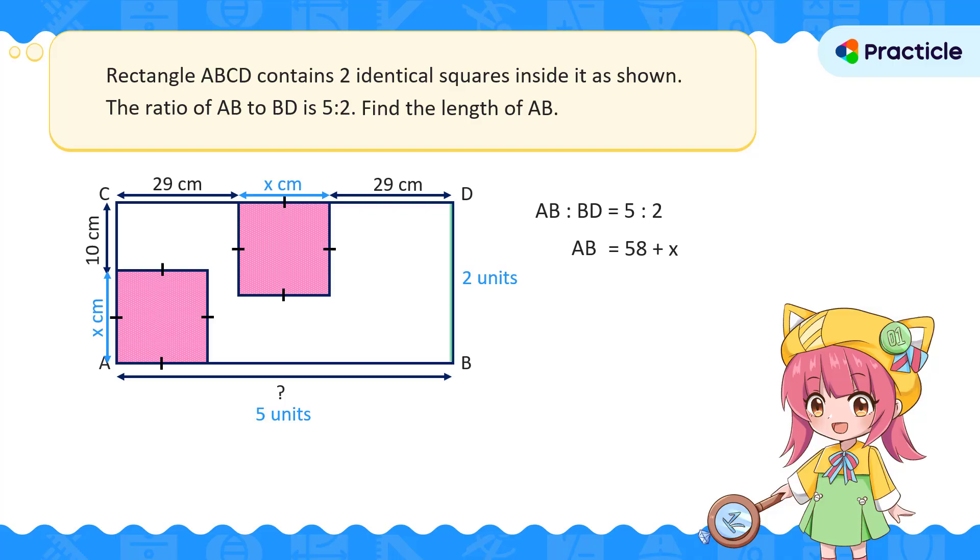Let's look at BD next. BD is the breadth of rectangle ABCD. Looking at CA over here, we can tell that it's 10 plus x cm.